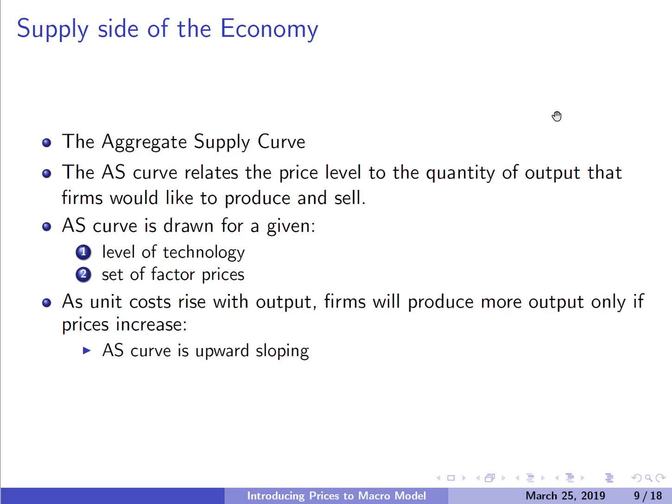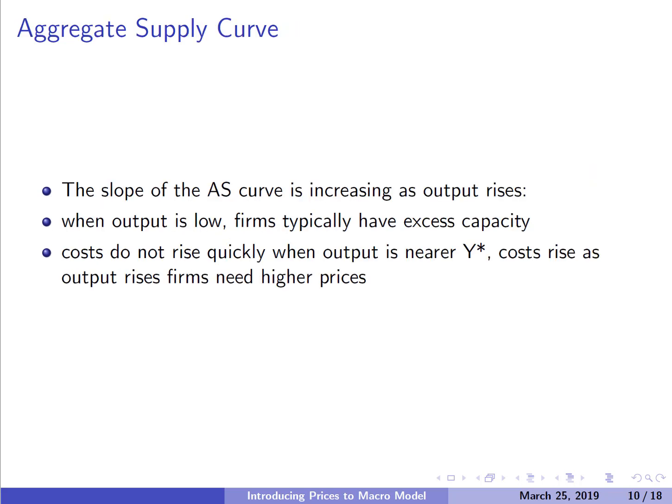As unit costs rise with output — we've learned that at a certain point the marginal cost curve is increasing — firms are only going to produce more if the price increases. This gives us an upward-sloping relationship between what firms are willing to produce and sell and the price level, just like the supply curve we saw in microeconomics. Not only is the AS curve upward sloping, its slope is actually increasing as we produce more output, getting steeper and steeper as we move to the right on the real GDP x-axis.